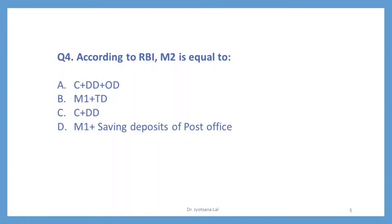What is the measure of M2 according to Reserve Bank of India? The correct option is D — M1 plus saving deposits of post office. If we see other options: option A, C plus DD plus OD, measures M1. Option B, M1 plus TD, is the concept of M3. Option C, C plus DD, means currency and demand deposit — it is a part of M1. So correct option is D. M2 is less liquid than M1 money supply.